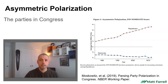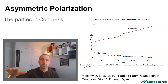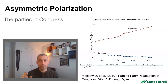A slightly different look at the same data: this is from a paper by Moskowitz et al. looking at party polarization as of 2019, and they found something very similar. We can see the blue line for the Democrats hovering around the midpoint, starting to get a little bit more extreme, but still staying pretty close to the center. The Republicans, by comparison, show a much greater magnitude of movement away from the midpoint. So this would be another example of asymmetric polarization, where one group is staying the same and the other group is getting more extreme.